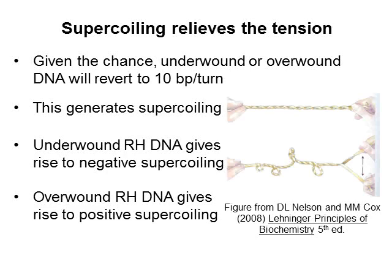Here's an example. We have a double helix at the top, and suppose we separate the two strands over a short stretch on the right. The twist for this stretch becomes zero, because the two strands aren't crossing one another at all. If neither end of the double helix rotates, the overall twist can't change. So the twist on the left-hand part of the double helix becomes more than it should be — that part is overwound. If we allow supercoiling, this allows DNA to stay at a twist of 10 base pairs per turn, and the resulting supercoiling, or writhe, is called positive supercoiling.